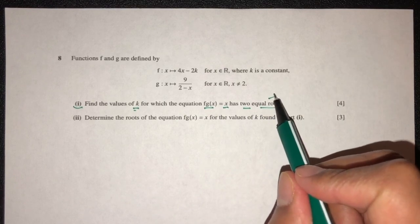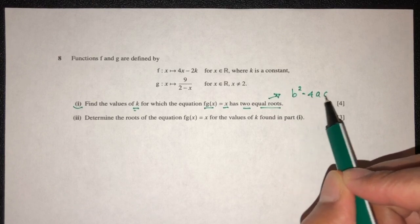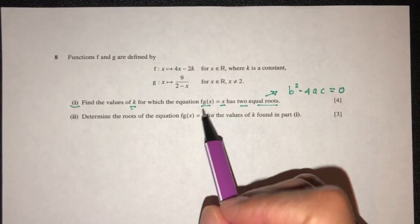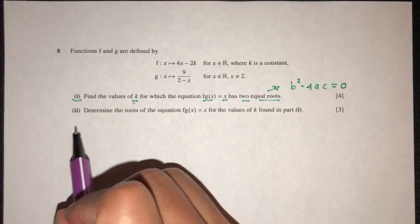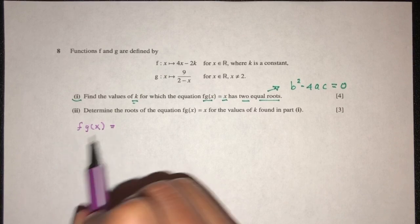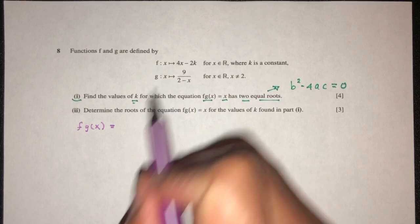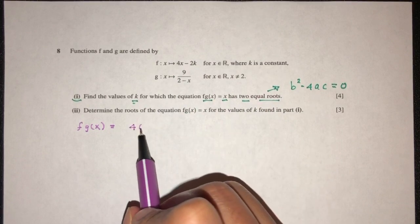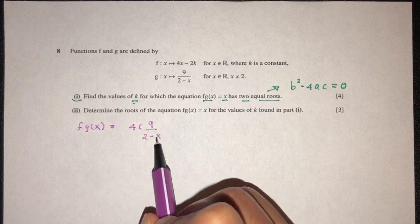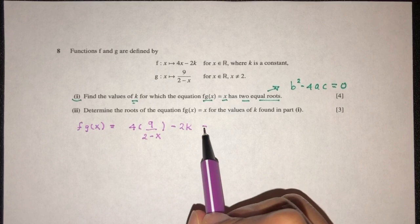Whenever we have equal roots, it means we have b² minus 4ac equal to zero. But first, let's find f(g(x)). So in this one, we have f(g(x)). Let's find what is that expression. That will be f is 4x, x is now g(x). That will be 9 over (2 minus x) minus 2k, equal to the value of x.